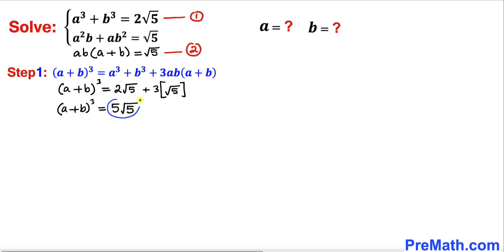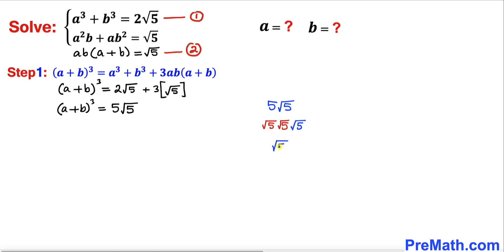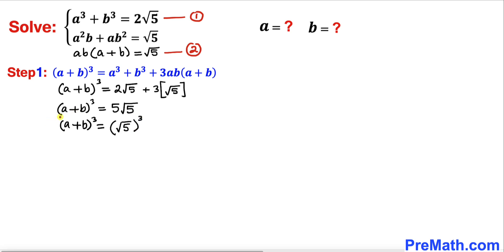Now let's focus on the right hand side. We can write 5 as √5 × √5, so 5√5 can be written as (√5)³. Therefore this equation becomes (a + b)³ = (√5)³. Taking cube roots on both sides, a + b turns out to be √5. Let me call this equation number three.